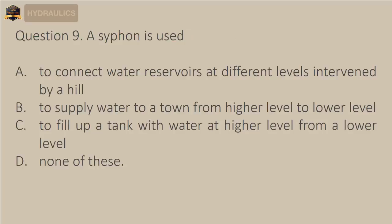Question 9: A siphon is used — A) to connect water reservoirs at different levels intervened by a hill, B) to supply water to a town from higher level to lower level, C) to fill up a tank with water at higher level from a lower level, D) none of these.